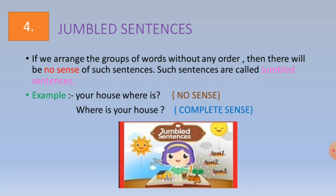But if we speak like this: 'Where is your house?' — this sentence makes complete sense, there is a meaning. So 'Your house where is?' has no sense, and such a sentence is called a jumbled sentence.